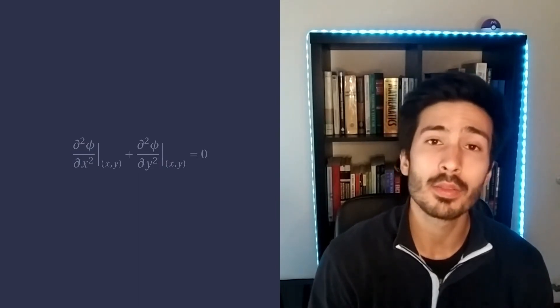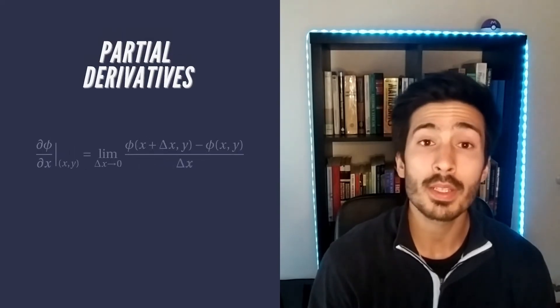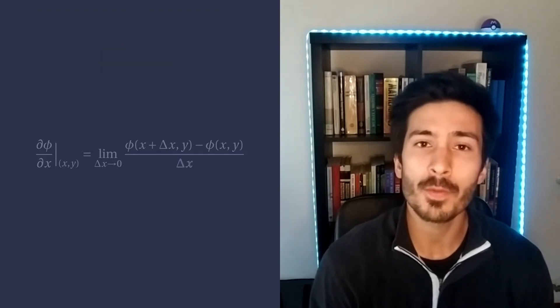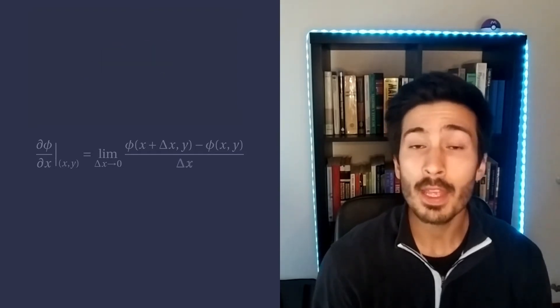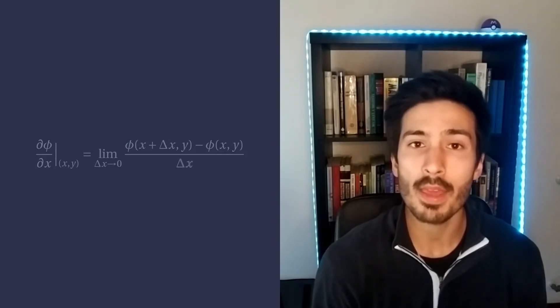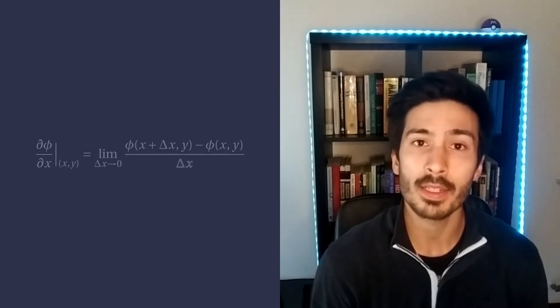Perhaps it is a good idea to take a look at the definition of partial derivative. It is very similar to the definition of the standard derivative, we just fix one of the coordinates. If the definitions are so closely related, perhaps we can use the same methods we used in the last video to find the formulas for the finite difference method applied to partial derivatives.